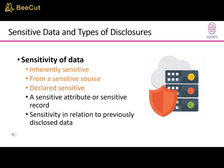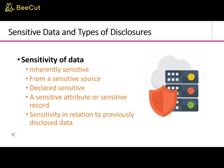Third, declared sensitive — the owner of the data may have explicitly declared it as sensitive. Fourth, a sensitive attribute or sensitive record — a particular attribute or record may have been declared sensitive, for example the salary attribute of an employee or the salary history record in a personnel database. Fifth, sensitive in relation to previously disclosed data — some data may not be sensitive by itself but becomes sensitive in the presence of other data, for example exact latitude and longitude for a location where a previously recorded event occurred that was later deemed sensitive.